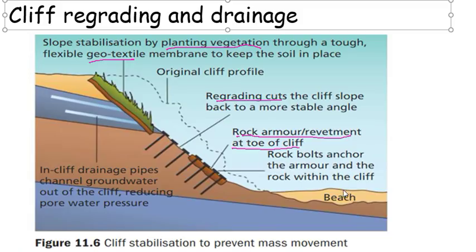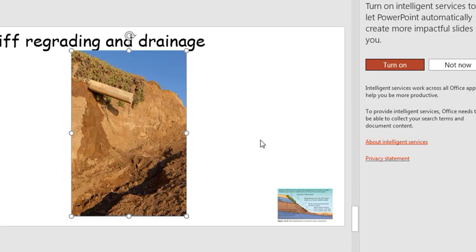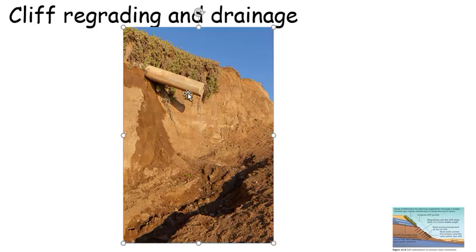We could use rock bolts and anchor the armour to the rock at the cliff foot — that's a hard engineering part of the strategy. We could also drain the cliff of groundwater, reducing pore water pressure. If we think about why we get rotational slumping, one factor is soft unconsolidated lithology, combined with gravity and the amount of saturation or moisture in that lithology. So if we can drain the cliffs, they're going to have less water in them and are less likely to slump. You can install pipes designed to drain water out of unconsolidated boulder clay, for instance, and onto the beach.